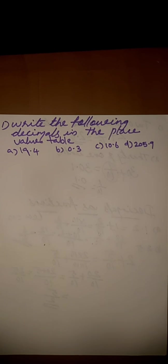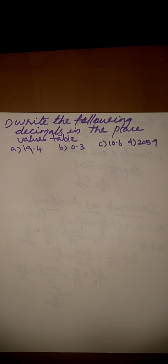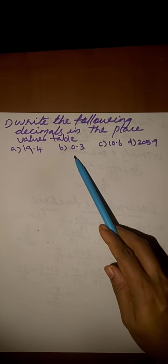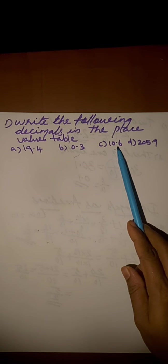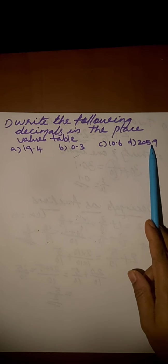Next, we discuss exercise number 8.1. First question, write the following decimals in the place value table. First one, 19.4. Second one, 0.3. Third one, 10.6. Fourth one, 205.9.